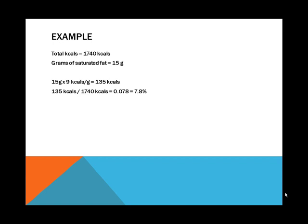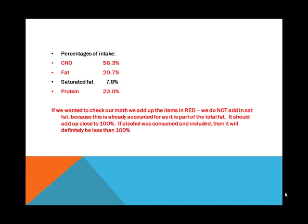We also need to calculate saturated fat, which is part of total fat. Total fat breaks down into saturated, unsaturated, and trans fat — those are the three main types. If there are 15 grams of saturated fat, fat is still 9 calories per gram, so 15 times 9 is 135 calories; 135 divided by 1,740 gives 7.8%. For protein, 100 grams times 4 is 400 calories; 400 divided by 1,740 comes out to 23%.